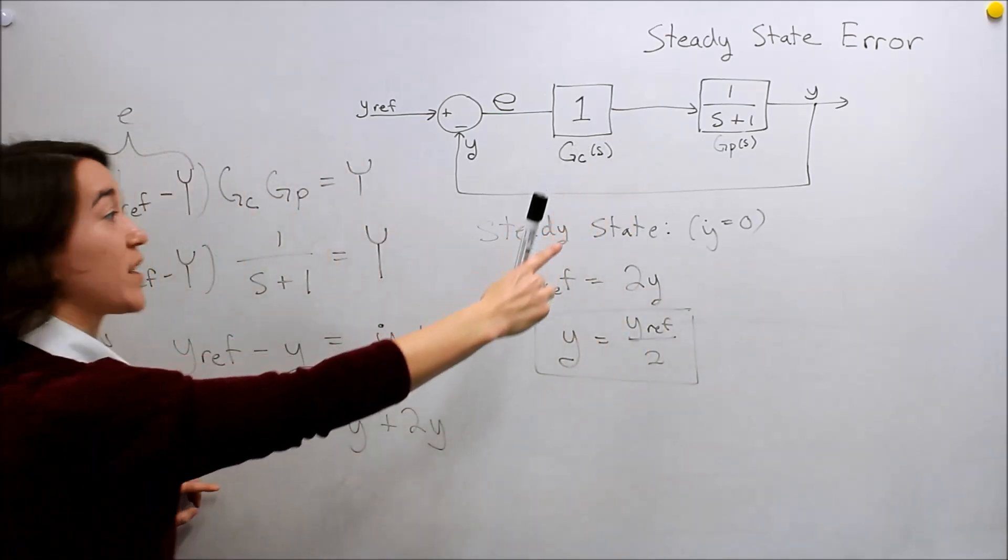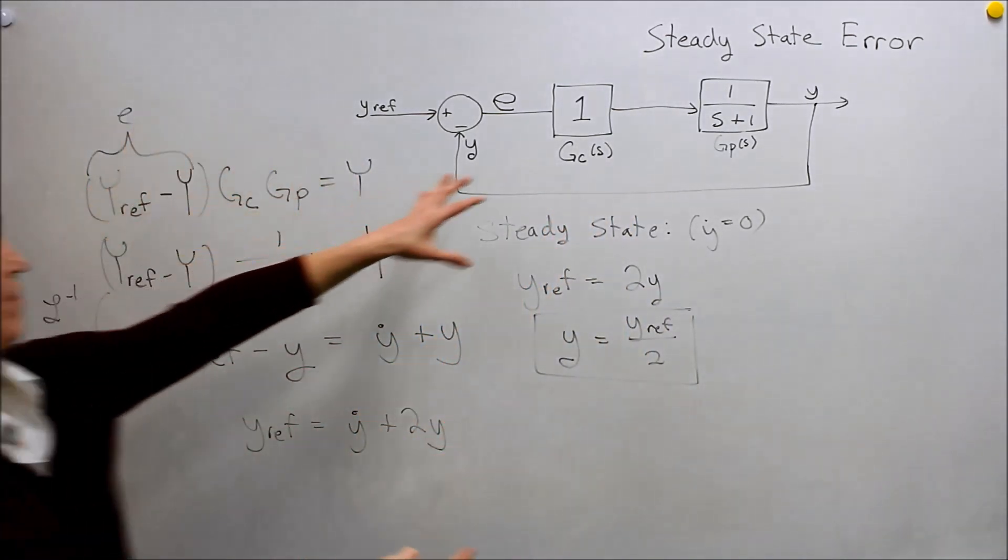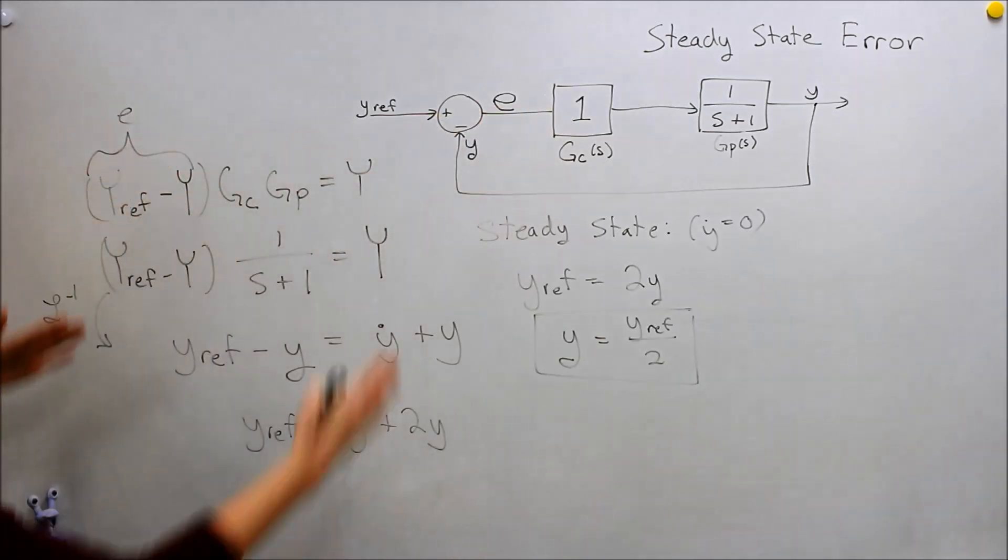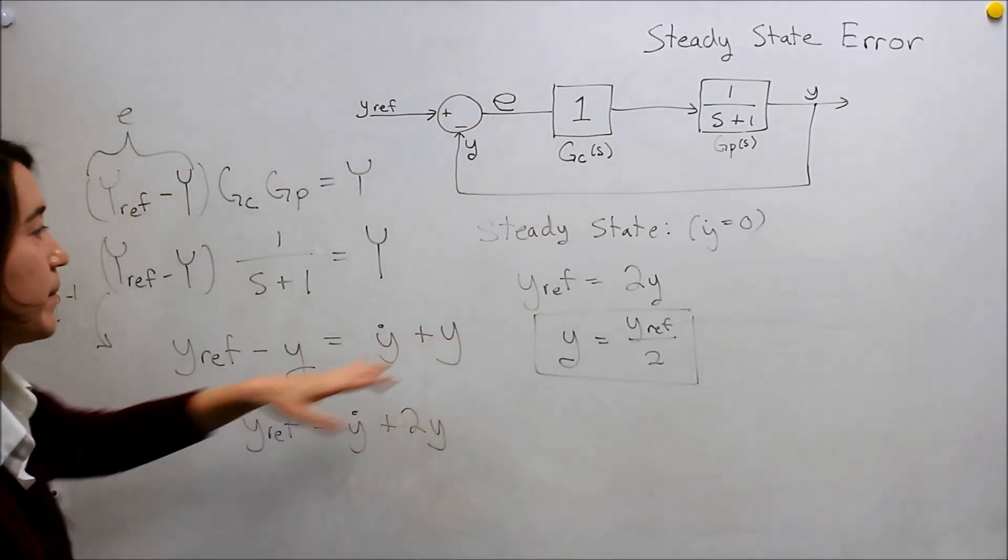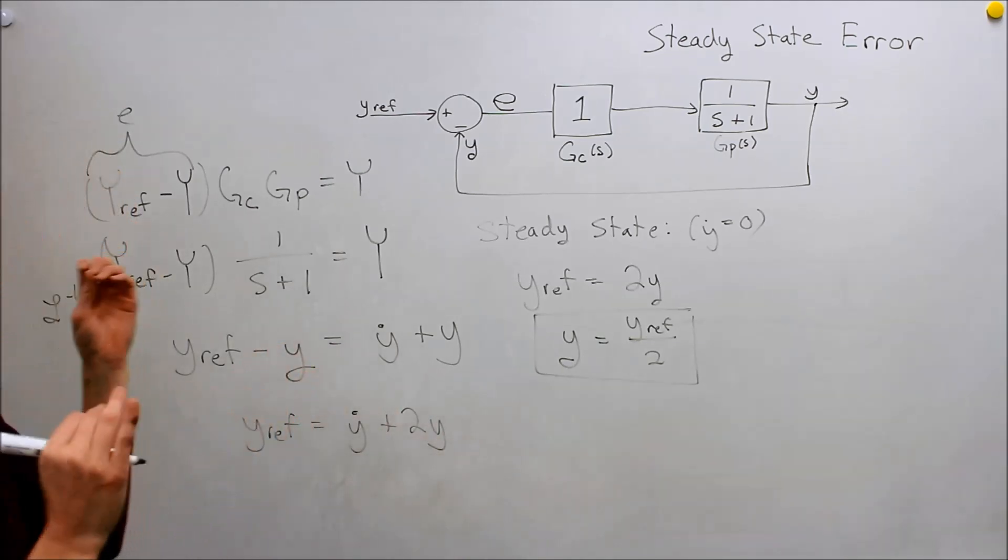That's for this specific equation, but you can do the same process for any of these equations to figure out what the steady state y value would be here. Then we also want to know the error, right?